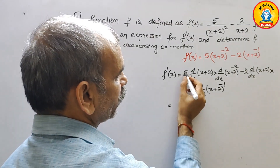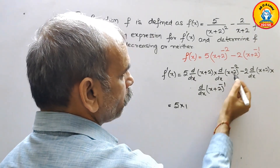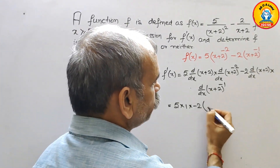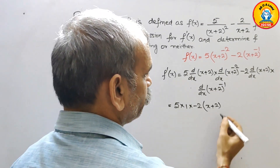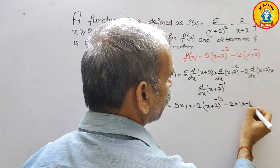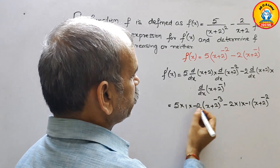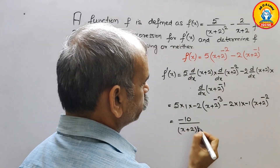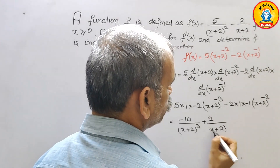If you differentiate, here we get 5 times 1, with power minus 2 giving minus 2, and (x+2) to the power minus 3. Same here: minus 2 times 1 times minus 1 gives (x+2) to the power minus 2. So this simplifies to minus 10/(x+2)³ plus 2/(x+2)².